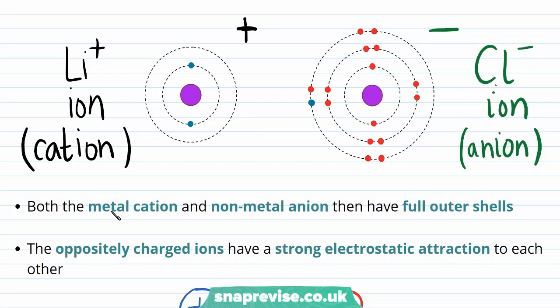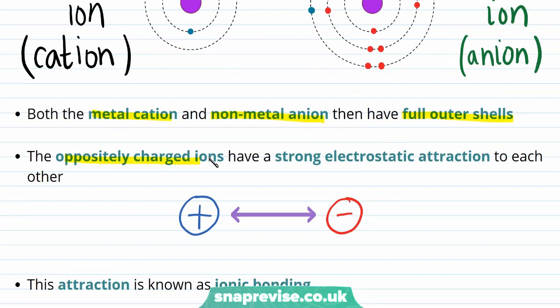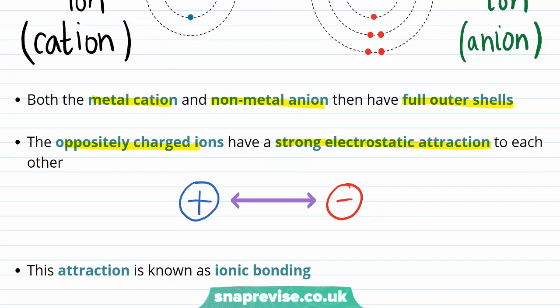You'll notice both the metal cation and the nonmetal anion now both have full outer shells. A full outer shell is especially stable, so both elements have gained stability going from the atom to the ion. Additionally, we've formed one positive ion and one negative ion, and these oppositely charged ions will have a strong electrostatic attraction to each other. Electrostatic attraction is what we call the attraction between a positive and a negative. It's this attraction which is known as the ionic bond.